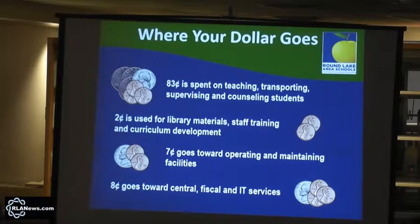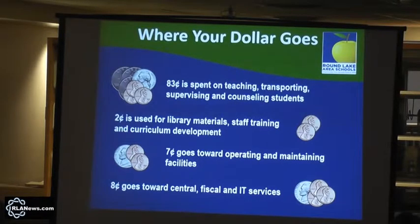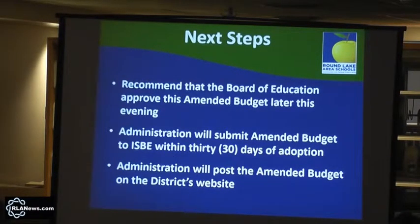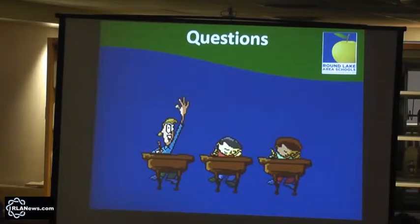This is a slide we've shown in the past. The only reason I'm showing it is that it really hasn't changed much. Adding the transfer from fund 40 to fund 10 takes the amount spent on education of students from $0.84 to $0.83 and increases central services from $0.07 to $0.08. Still, $0.92 goes towards educating students. The recommendation is that the board approve the budget amendment later this evening. We'll then submit it to the state within 30 days and post it on the district website as required by law. That concludes the presentation — we'll be happy to answer questions from the community as well as any board members.